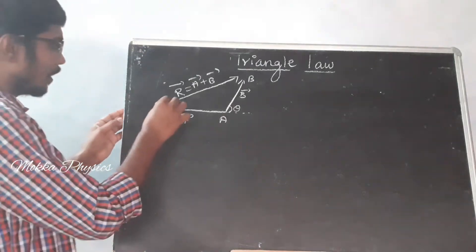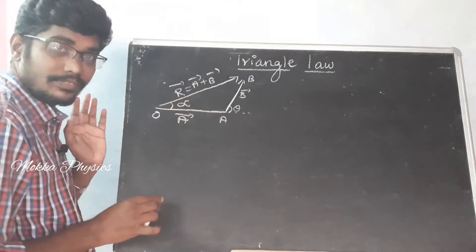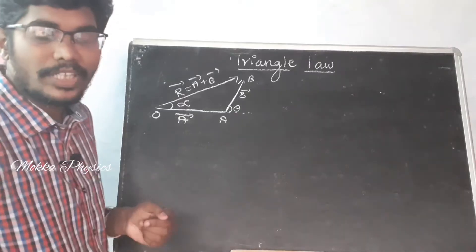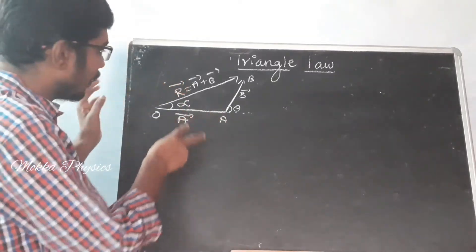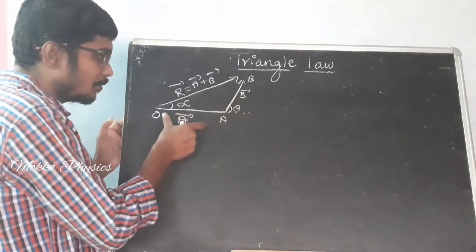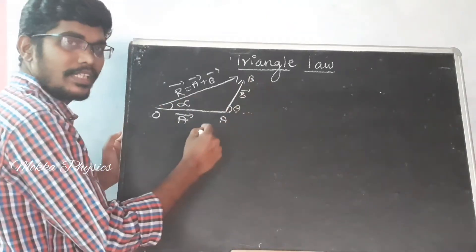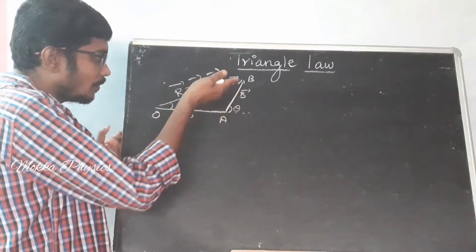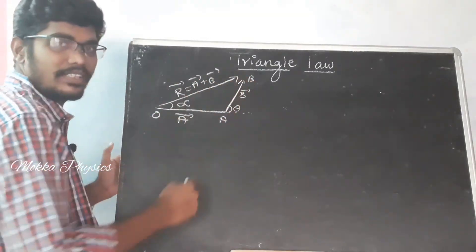If you want to denote the angle of the result, it is alpha. Now, you can derive a formula. The statement is: if two vectors are represented by two sides of a triangle taken in order, then the resultant will be on the closing side of the triangle taken in reverse order.